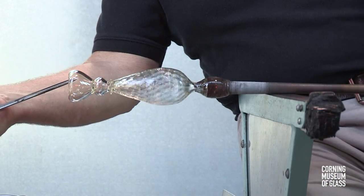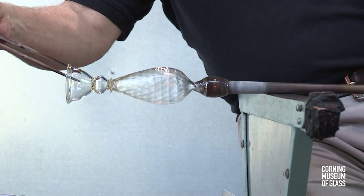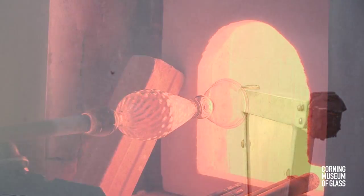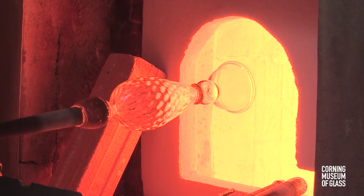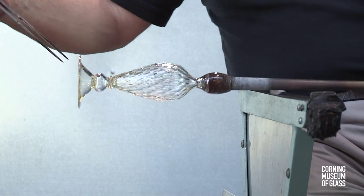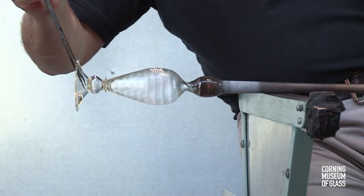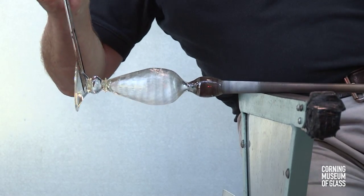This vessel has a folded edge on the foot. It's created by pushing the edge inward and lifting up with the jacks. The folded edge is double thickness, and it gives strength, as well as visual articulation of the edge.